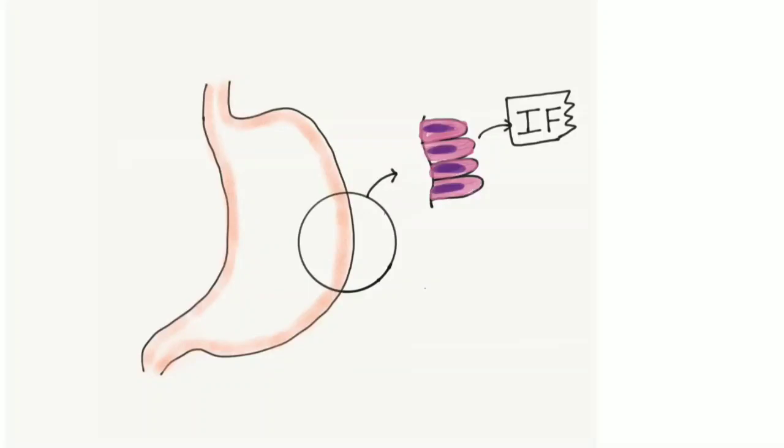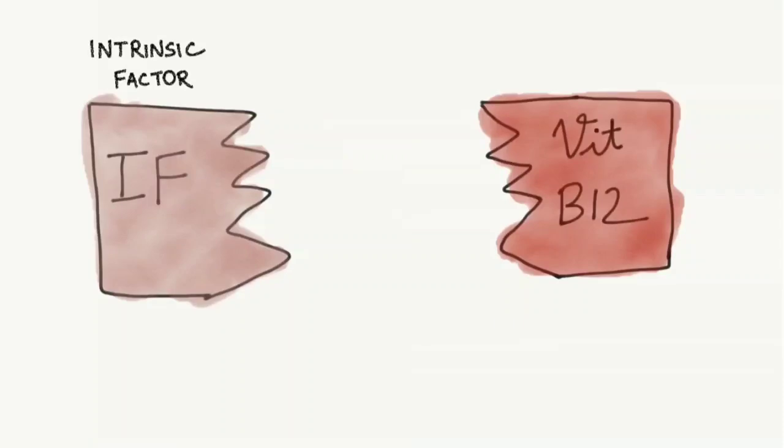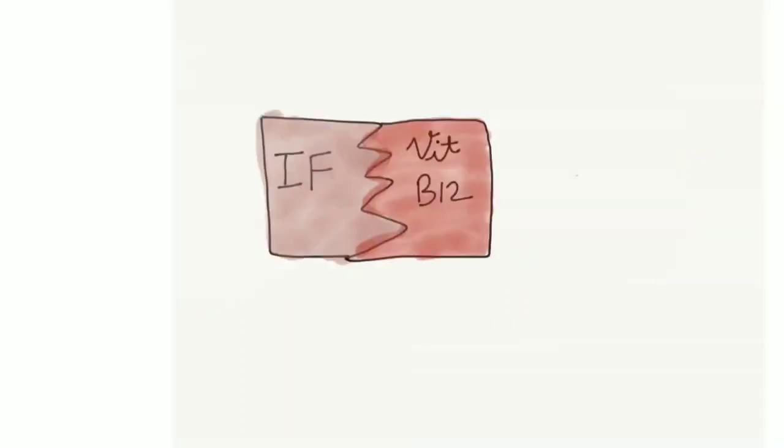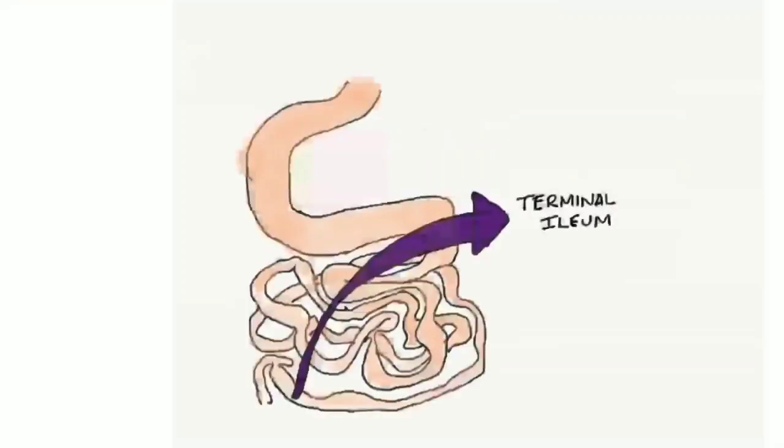The parietal cells, which are present in the gastric wall, secrete intrinsic factor. This intrinsic factor now binds with the free vitamin B12, which is present at the duodenum, to form intrinsic factor-vitamin B12 complex. This intrinsic factor-vitamin B12 complex reaches the terminal ileum of the small intestine.